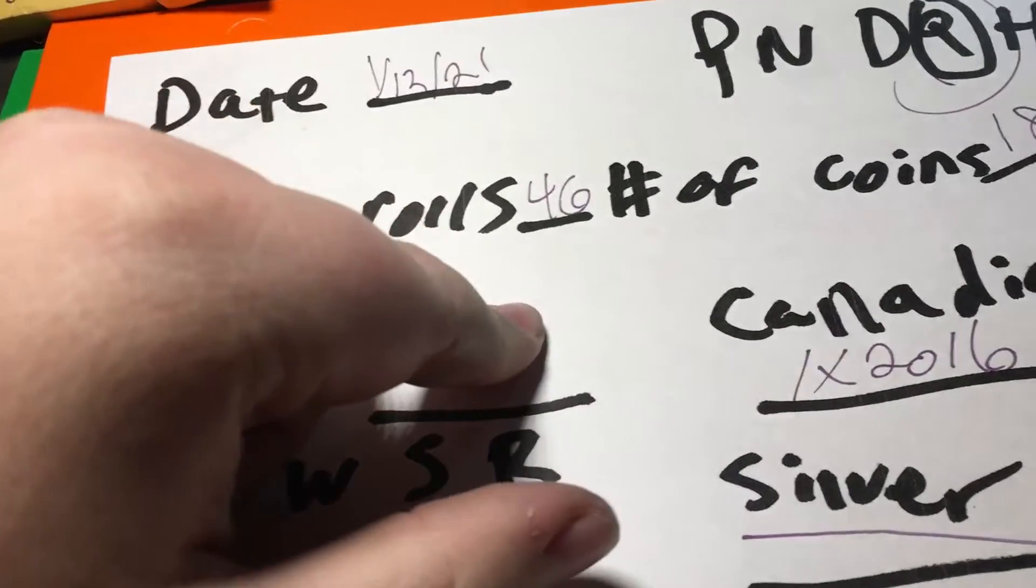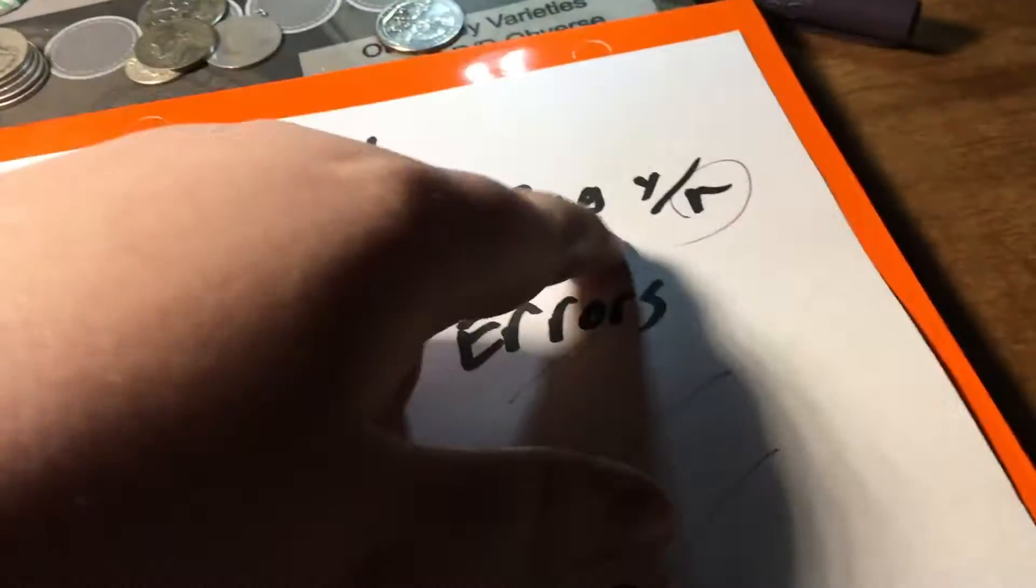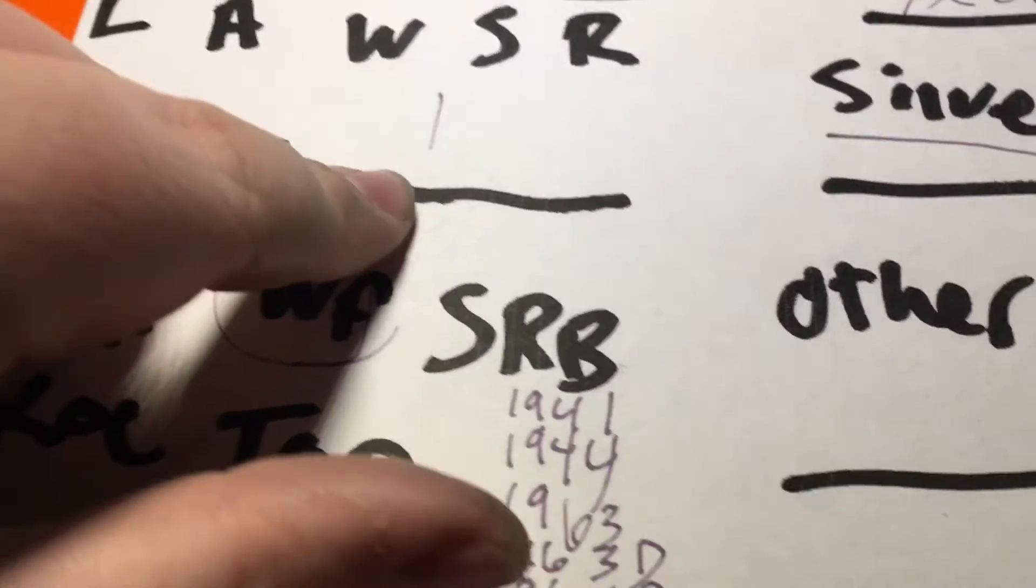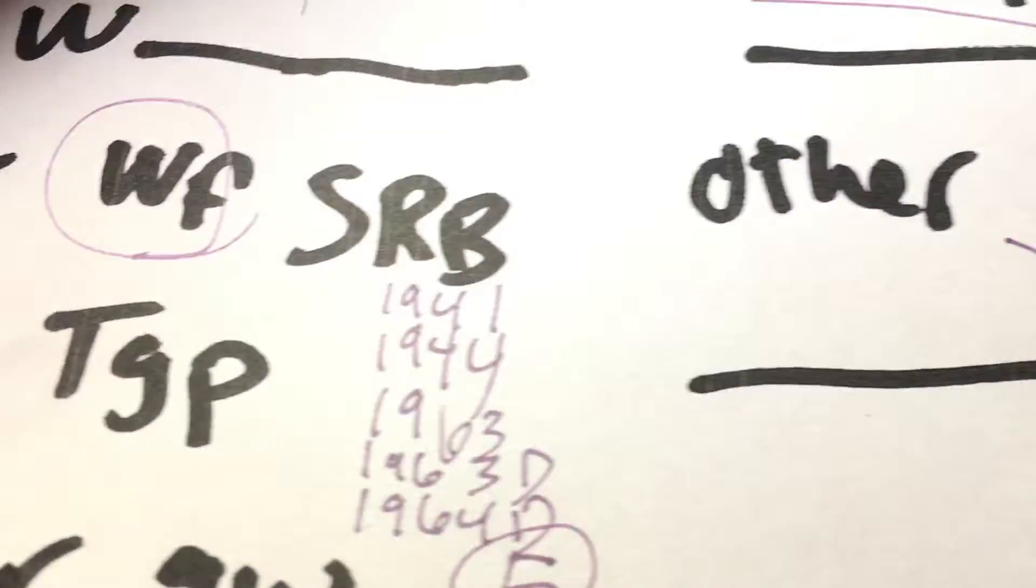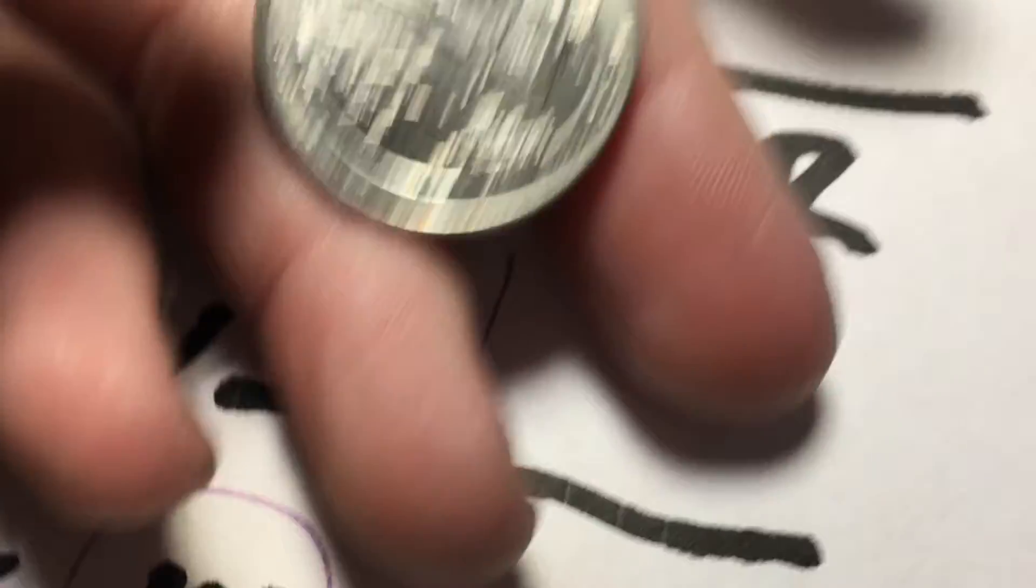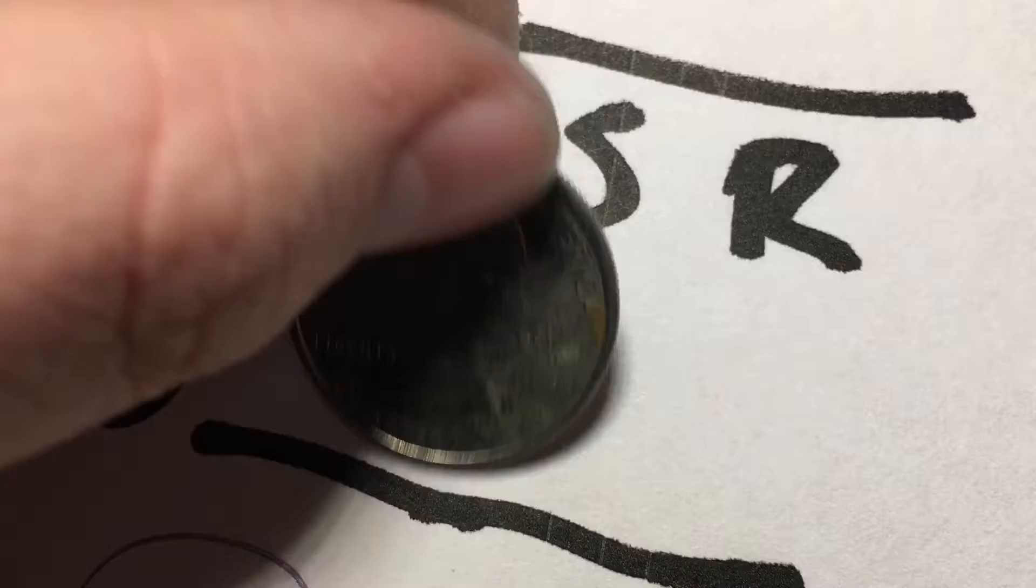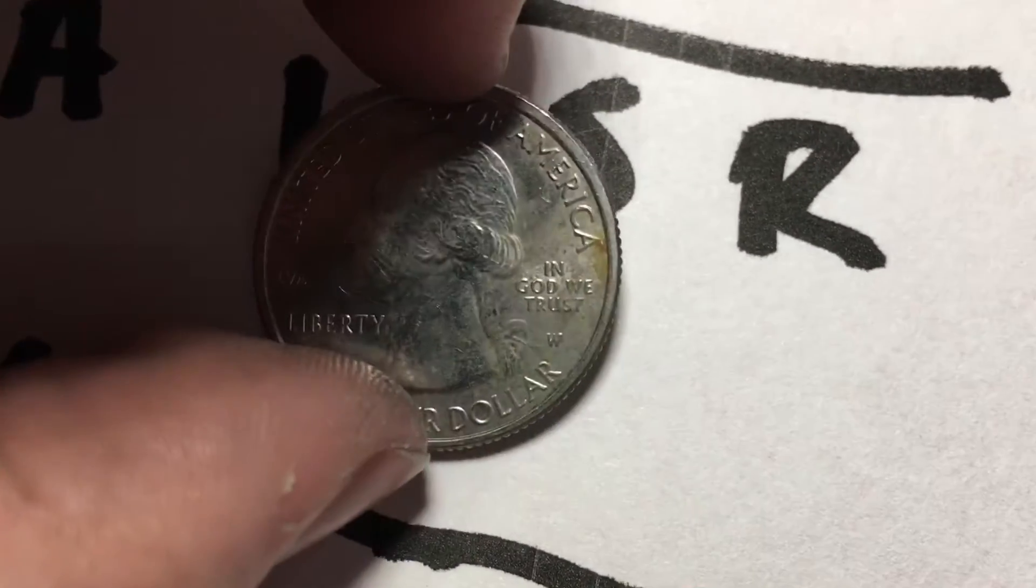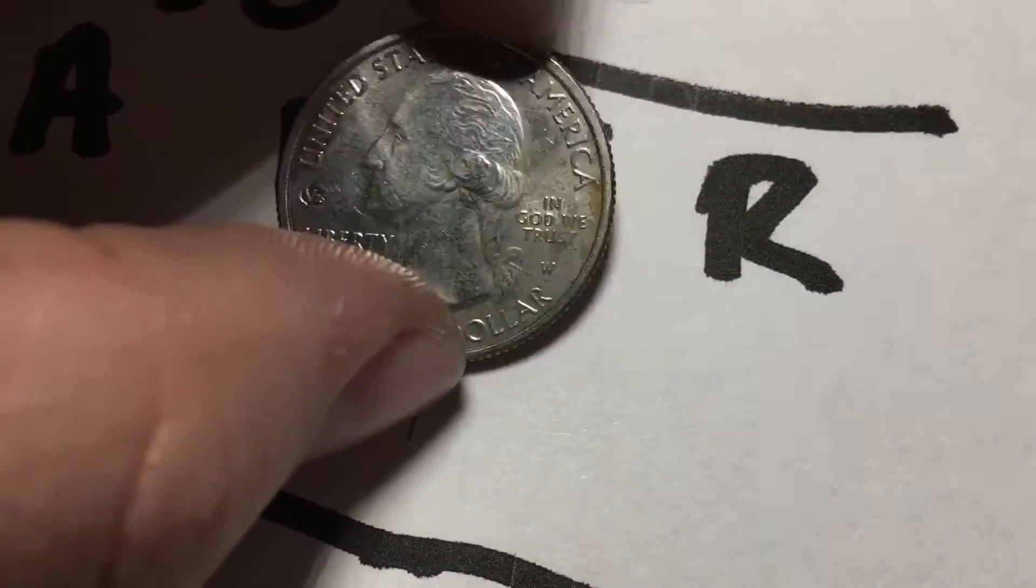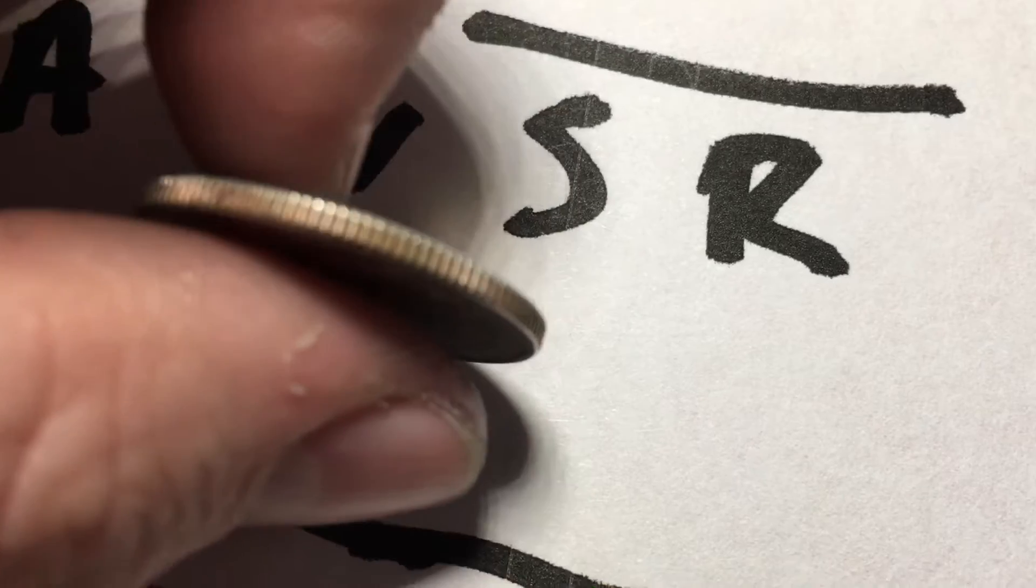For quarters, we went through 46 rolls, which is 1,840 coins. I found a 2020-W Weir Farms, and that is right here. It's pretty darn messed up on the front, but I saw that V75 and I'm like, oh yeah, got a W. I couldn't tell by the rim. It's all messed up, not pretty anymore, but it'll still go into the collection.